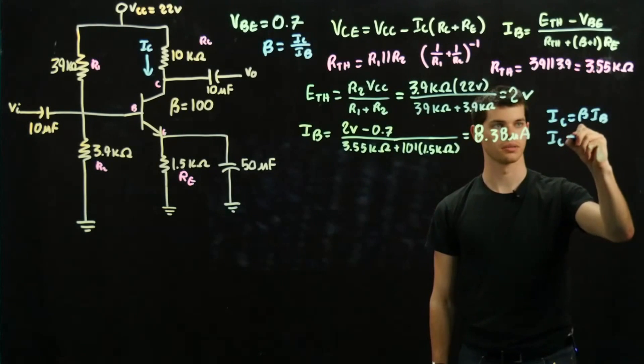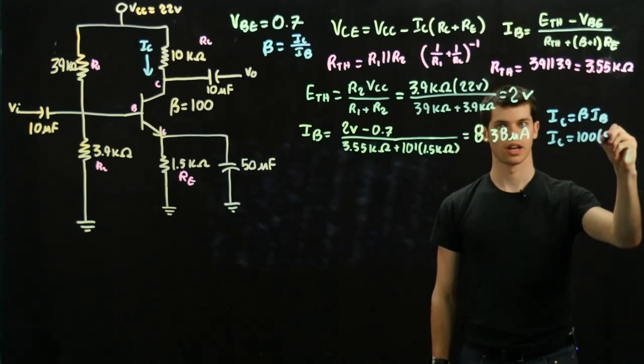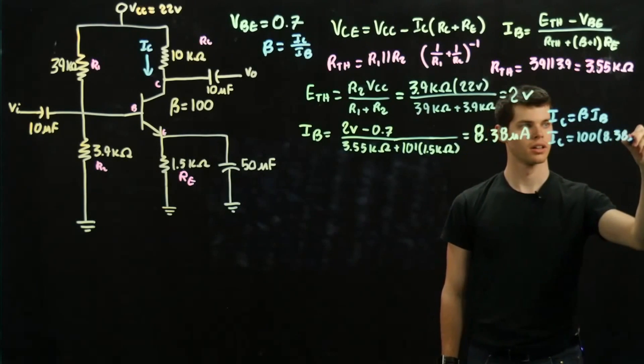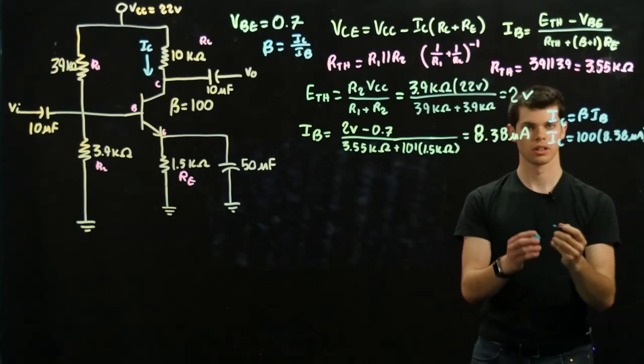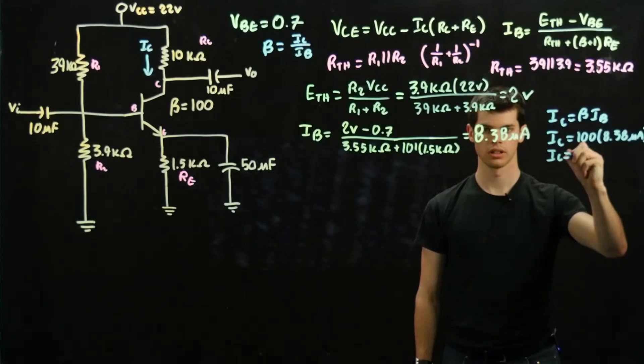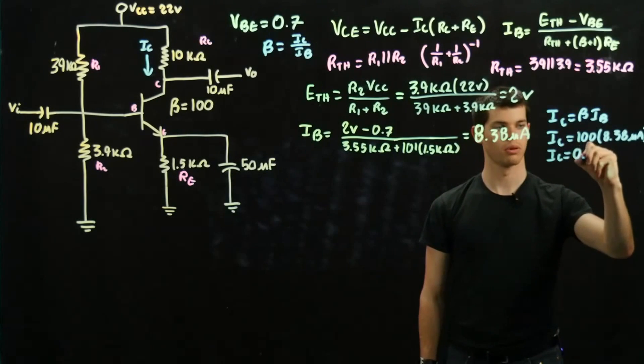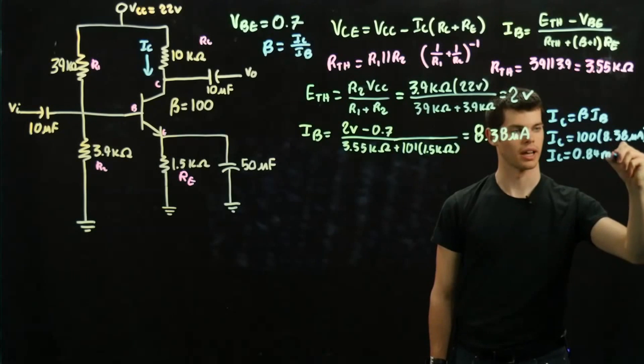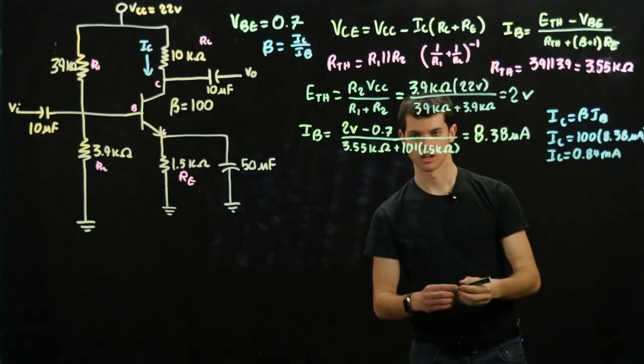Okay, IC is now equal to 100 times 8.38 microamps. And then IC is going to be equal to 0.84 milliamps.